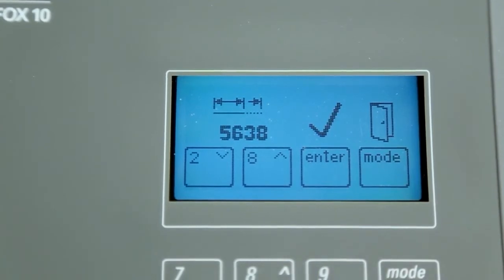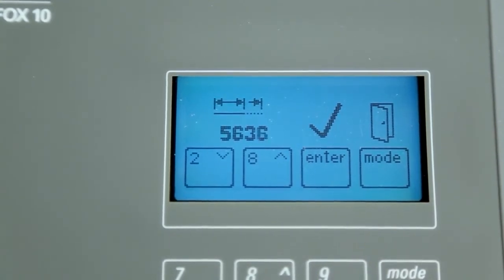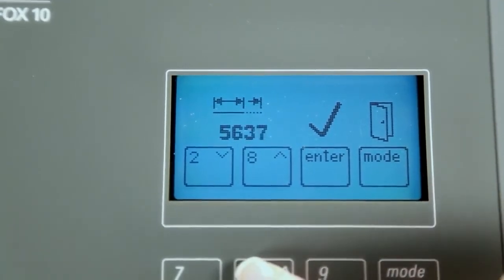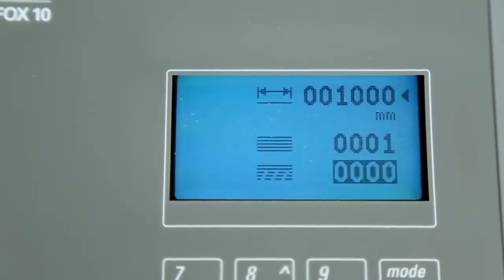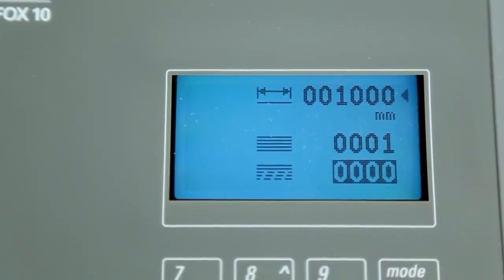The number 2 key lowers this value if your scrapped meter wire is too long or the number 8 if it was too short. Press the Enter key. Request another meter of wire to test its measurement and repeat the steps if necessary.